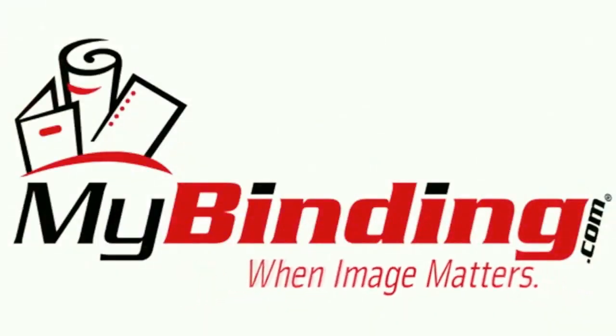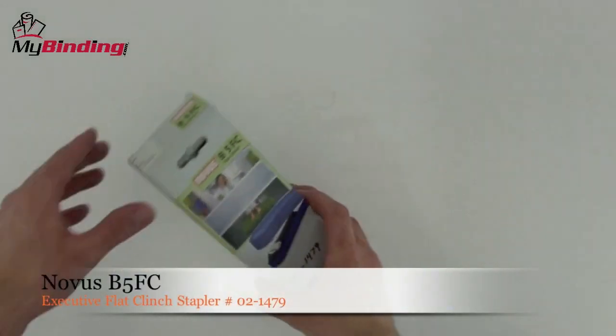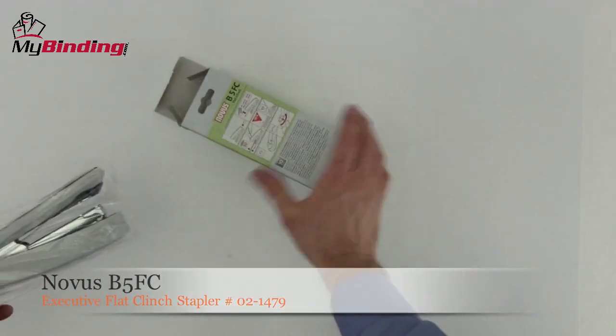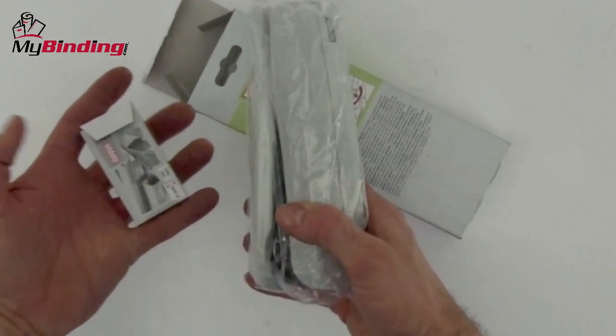Welcome to MyBinding video. Let's check out the Novus B5 FC, an executive flat clench stapler. Simple, sharp, does the job, and comes with some free staples.